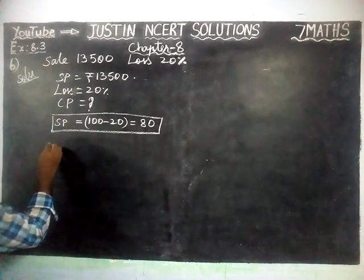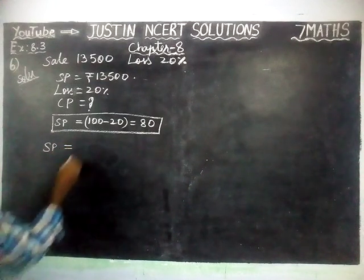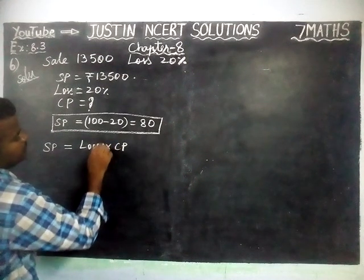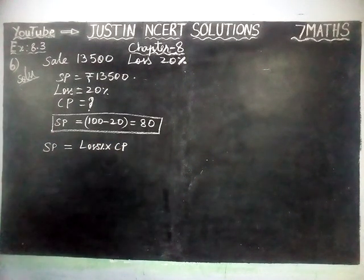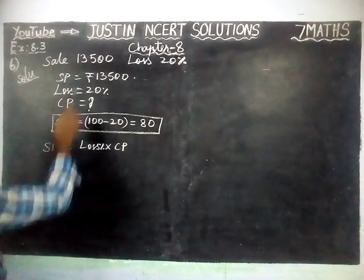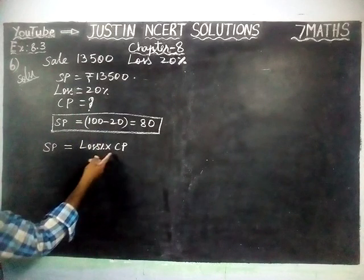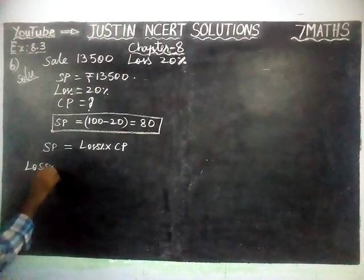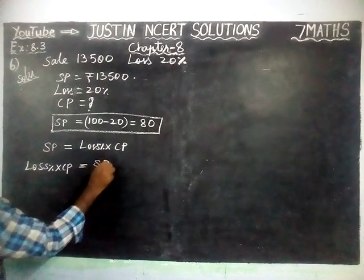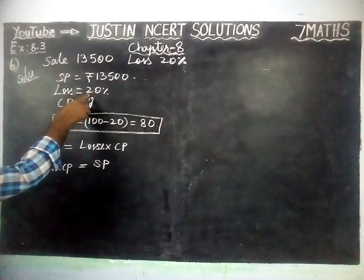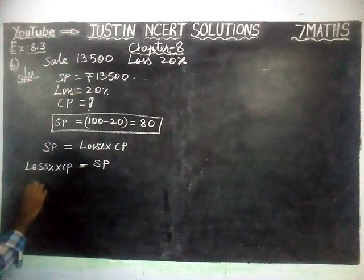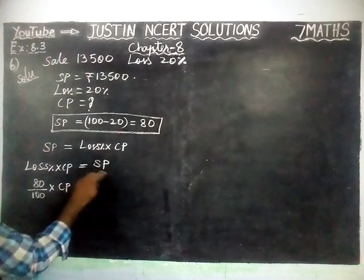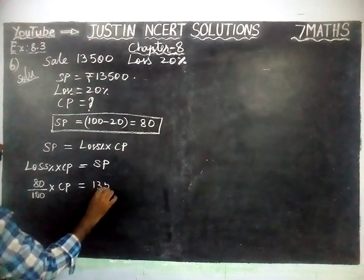Sale price is equal to loss percentage into cost price. We are going to interchange the places, so loss percentage into cost price is equal to sale price. We know that 20% has been converted into 80 divided by 100, into cost price, equals sale price equals 13,500.